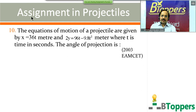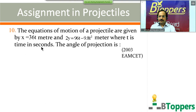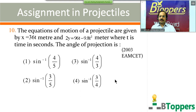Question number 10: the equations of motion of a projectile are given by x = 36t meters and 2y = 36t − 9.8t² meters, where t is time in seconds. The angle of projection is — four options are shown on screen. This question was given in one of the previous entrance examinations, engineering entrance approximately 2003. Come on, try the question.